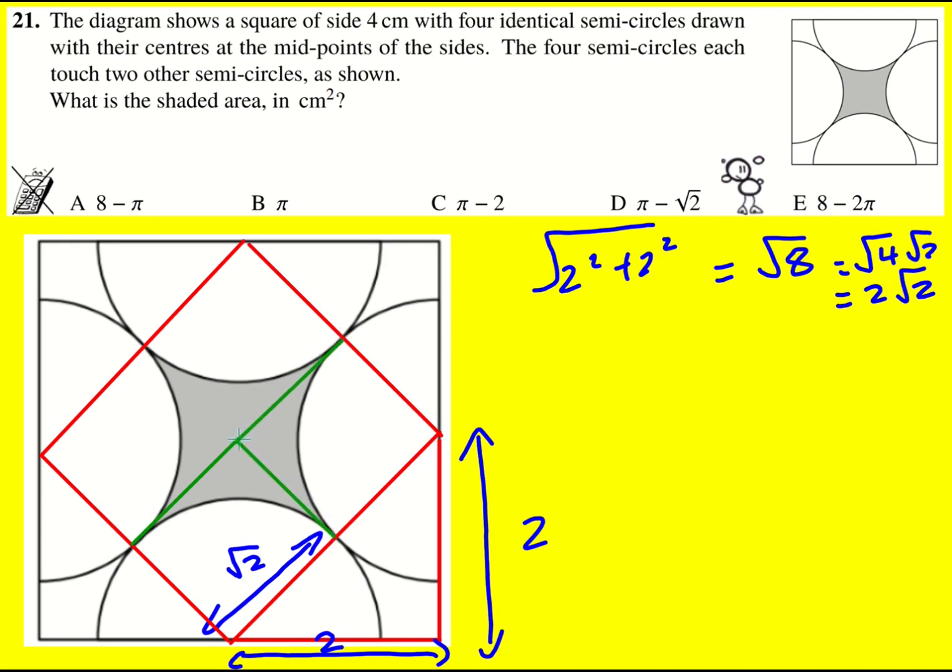So from the center connect these. If we can work out the shaded area, I'm going to focus on the top one actually, because I've already written quite a lot down here. If I can just find this area, then I can times it by four.